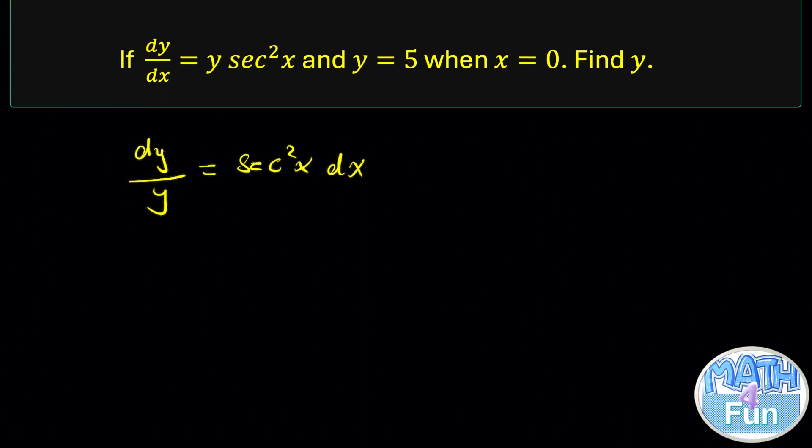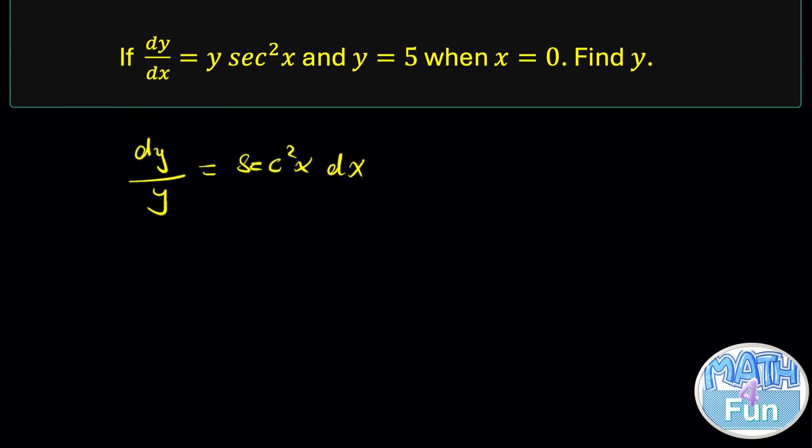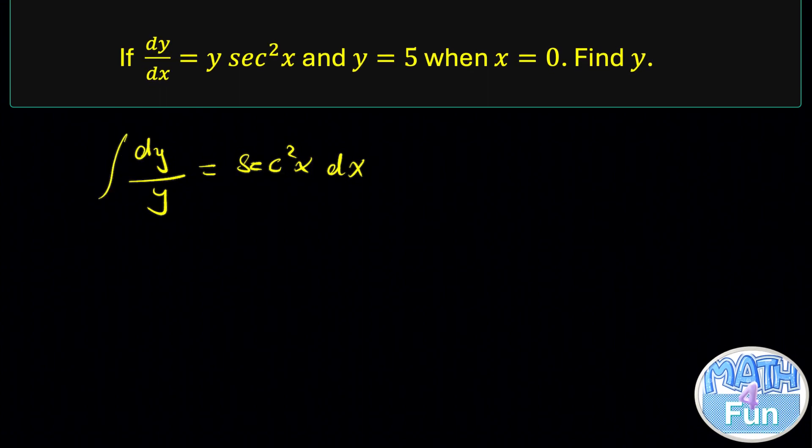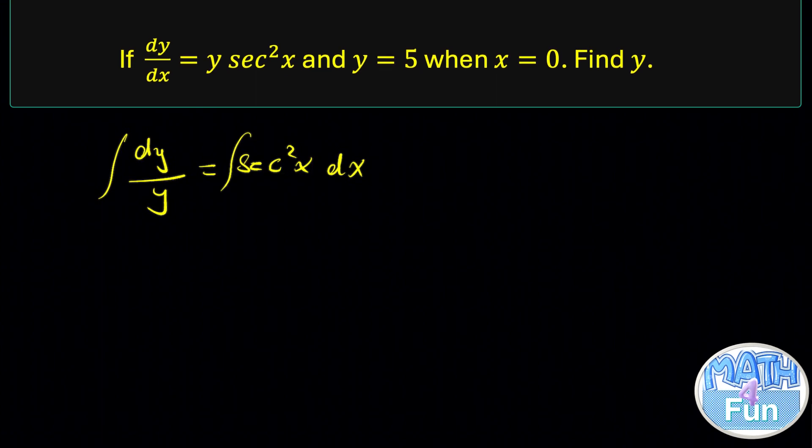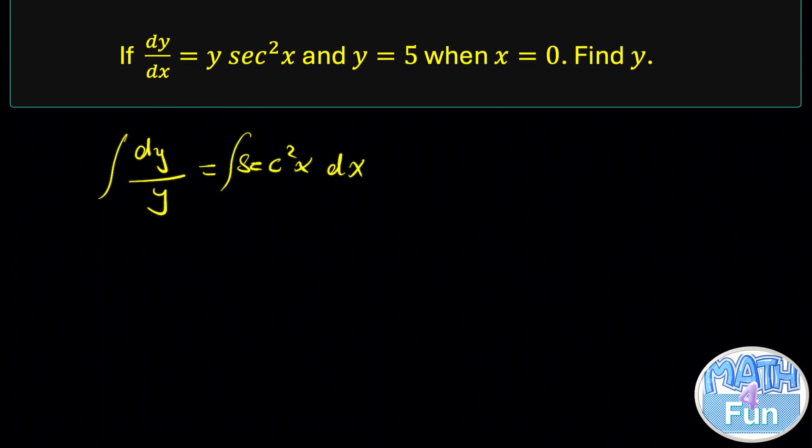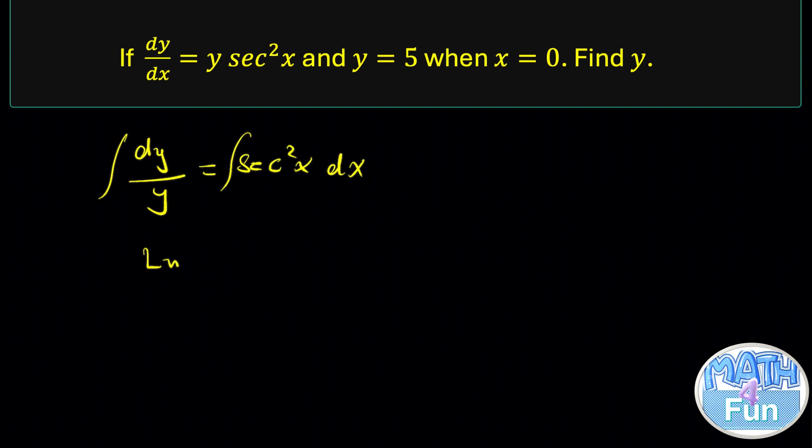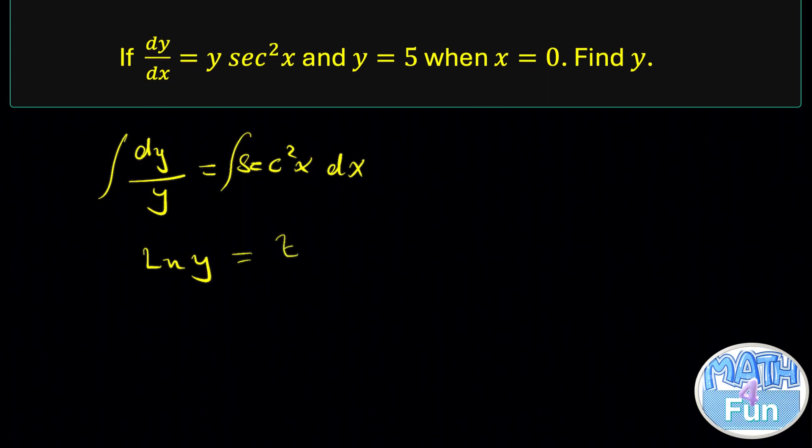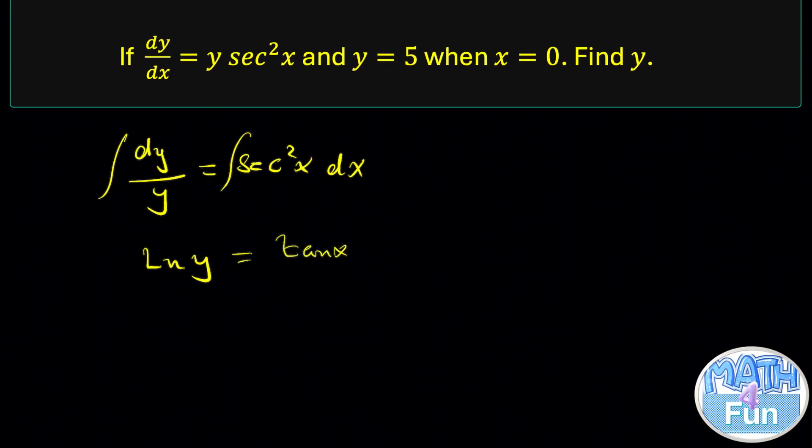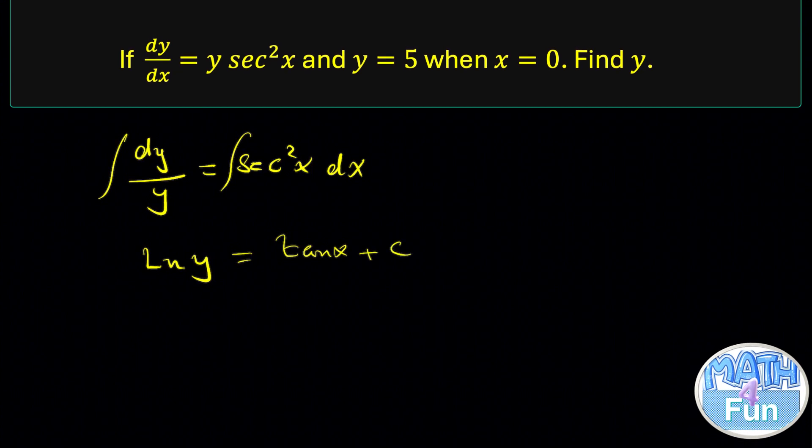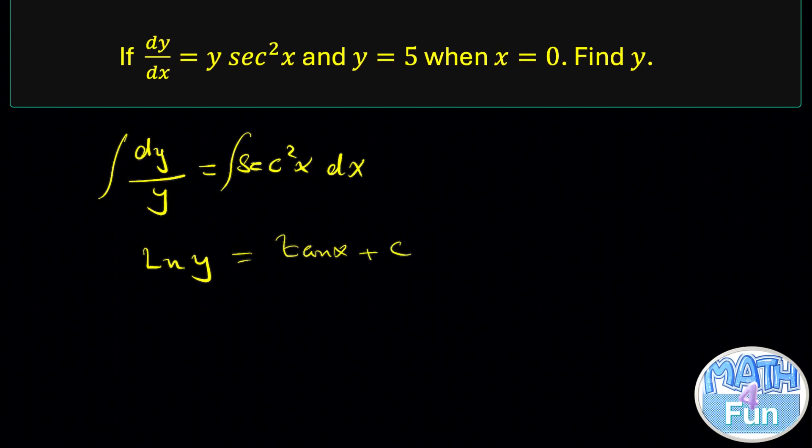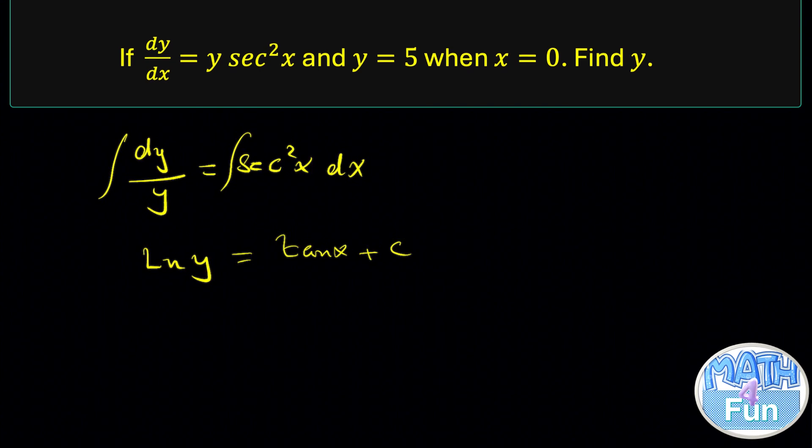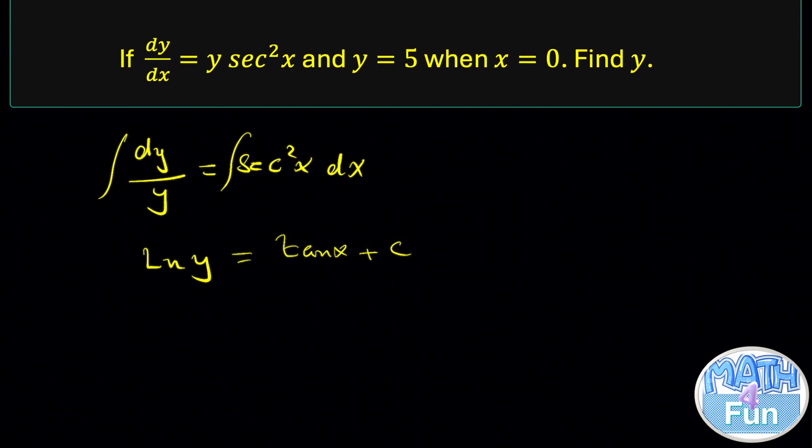Now, to find y, let's integrate both sides. We put integral here and integral here. The integral of dy/y is equal to ln y. That's clear, right? Equals—what's the integral of sec²x dx? It is tan x plus constant. Why? Because the derivative of tangent equals sec squared, so the integral of sec squared is tan x.